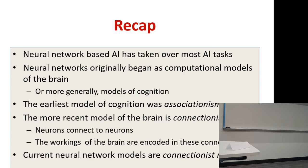Here's a quick recap of everything we've seen so far. Neural network-based AI has taken over most AI tasks. These things began originally as computational models of the brain, or more generally models of cognition. The earliest model of cognition was associationism; the more recent one is connectionism, which says neurons are connected and the workings of the brain are encoded in the connections. Current neural network models are all connectionist machines.